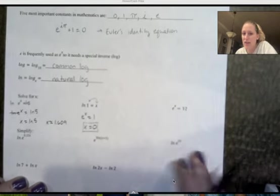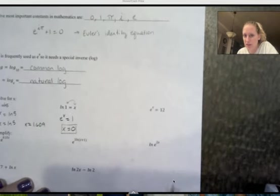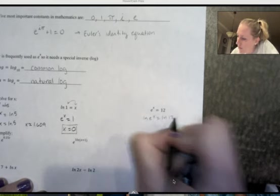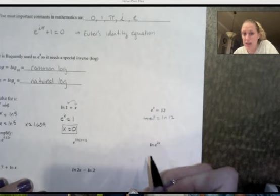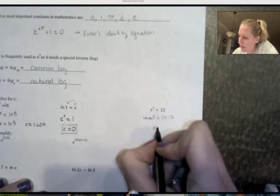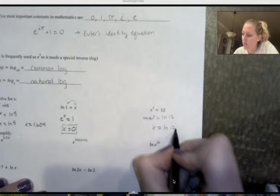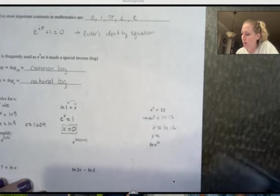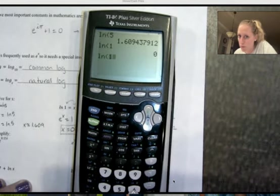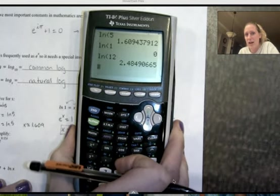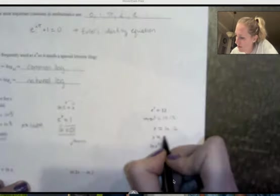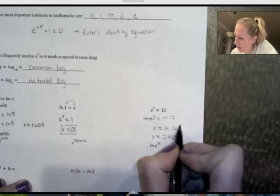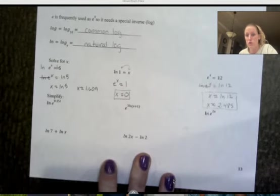This one, again, we're trying to get x by itself, so I need to get rid of e, so we're going to apply the natural log to both sides. Natural log of e is 1, so we're left with 1x equals natural log of 12. This is the exact answer. The approximate answer using our calculator, natural log of 12 is 2.485. So there are my solutions.